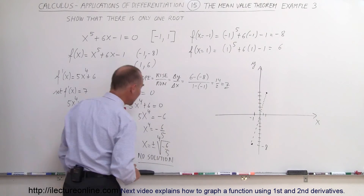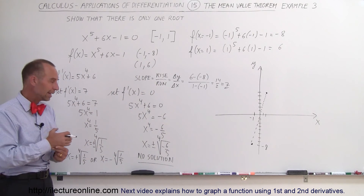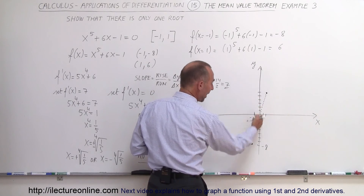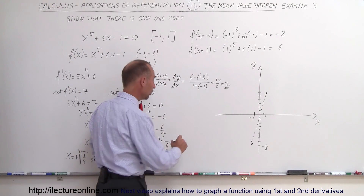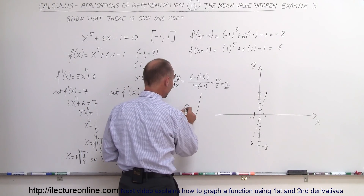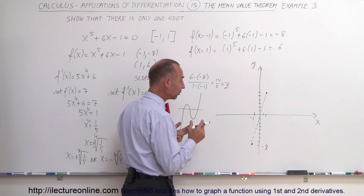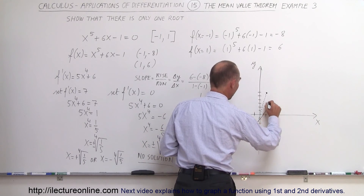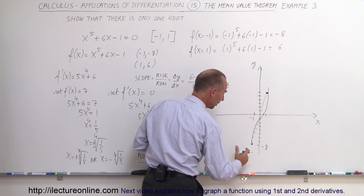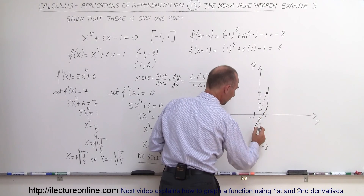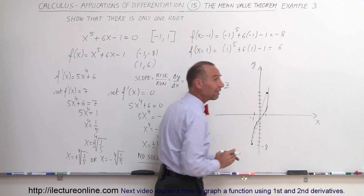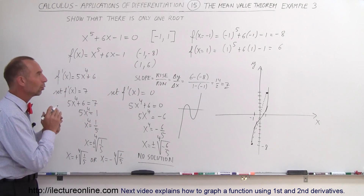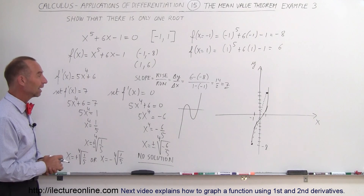Since there's no local max or min between x = -1 and x = 1, even though there are two places where the derivative matches the slope of the secant line, the function cannot oscillate and produce multiple roots. The function must be monotonically shaped across the interval, crossing the x-axis exactly once. Therefore, there can only be one root on that interval, which is what we set out to show.